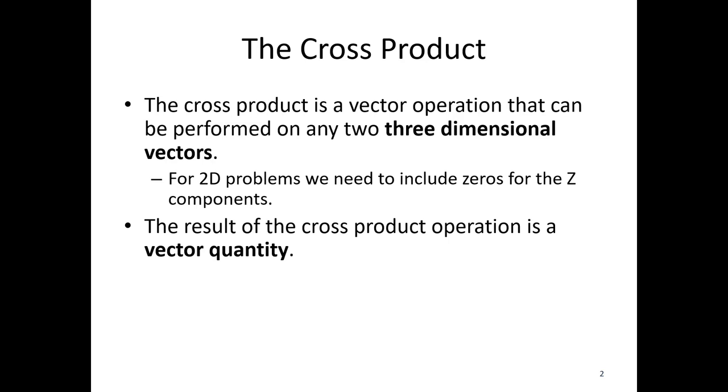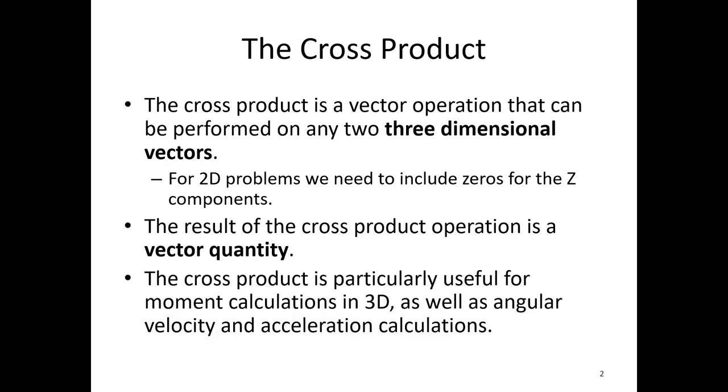The result of a cross product operation is a vector quantity. Unlike the dot product, which gives you a scalar, here we're going to have a vector as the output. The cross product is particularly useful in engineering for moment calculations in 3D, as well as angular velocity and angular acceleration calculations in 3D.